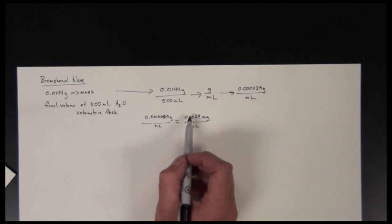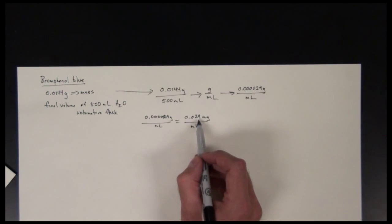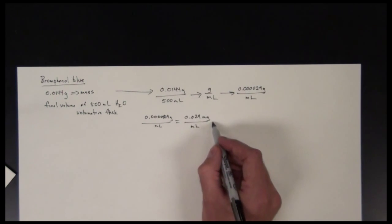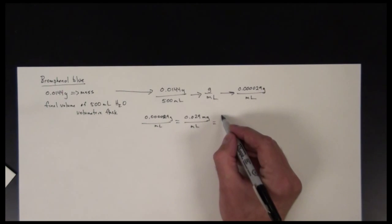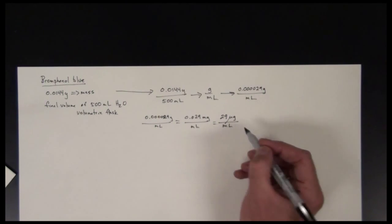I moved it over 1,000 times, moved this decimal point over three places. So I have 0.029 milligrams per mil. This is also equivalent to 29 micrograms per milliliter.